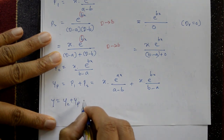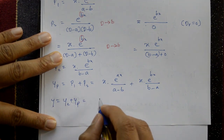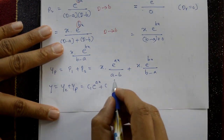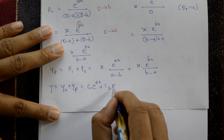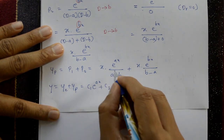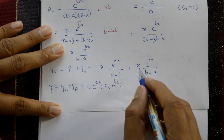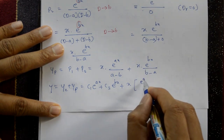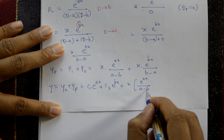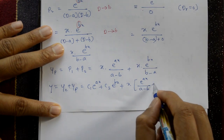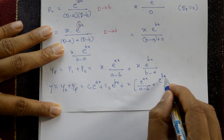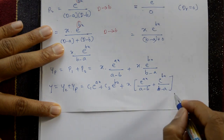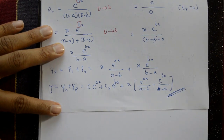The complete solution is y = yc + yp: y = c₁e^(ax) + c₂e^(bx) + x·[e^(ax)/(a-b) + e^(bx)/(b-a)]. This is the required general complete solution.